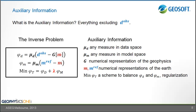We know that the inverse problem is ill-posed, so we have to add some extra constraint — we want our final result to look like some sort of target or reference model. In our inversion we have our estimated model, and we measure how far away it is from our target model using a distance in model space, called phi m, the model measure. We combine the data measure and model measure using a Tikhonov regularization, trading them off with a regularization parameter, then minimize their sum.